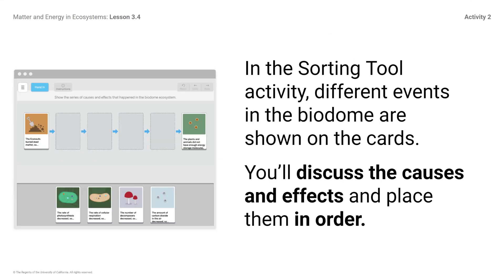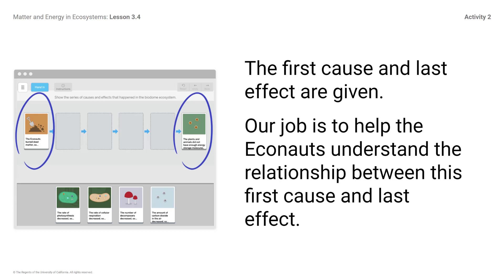In the sorting tool activity, different events in the biodome are shown on the cards. You'll discuss the causes and effects and place them in order. The first cause and the last effect are given. Our job is to help the Econauts understand the relationship between this first cause and the last effect.